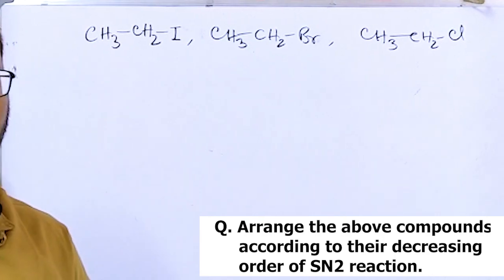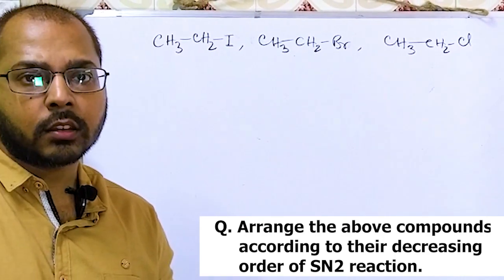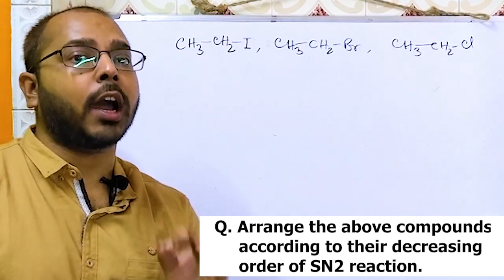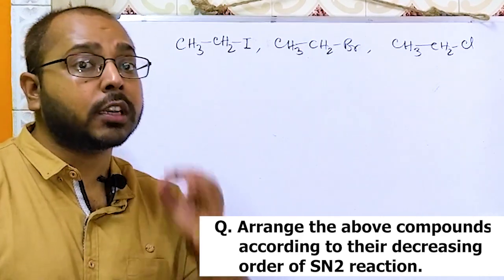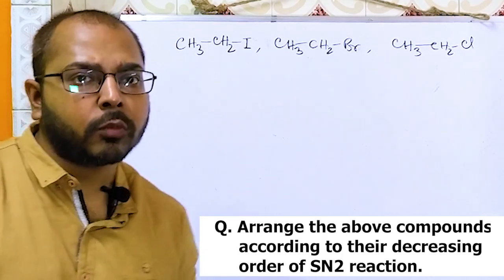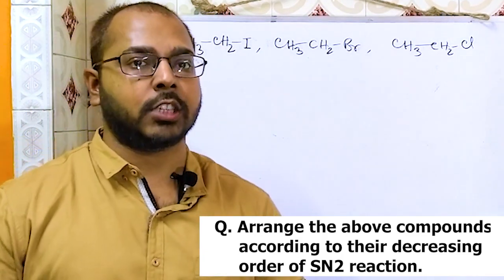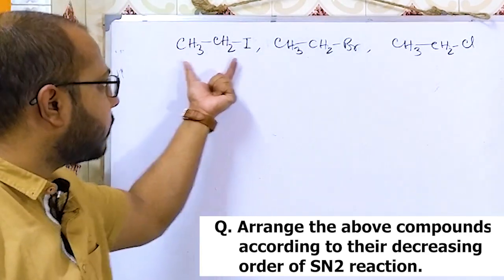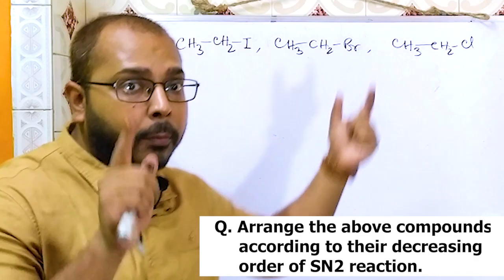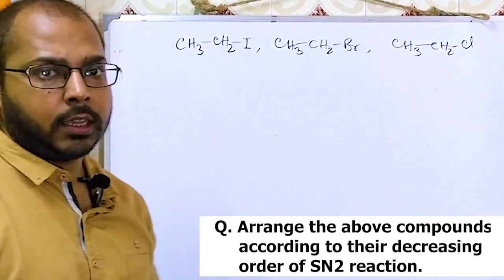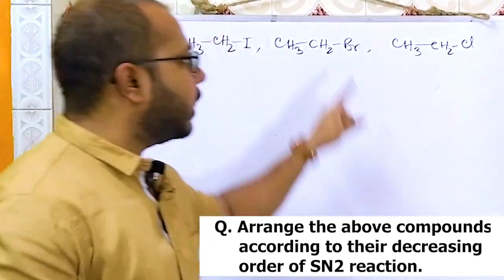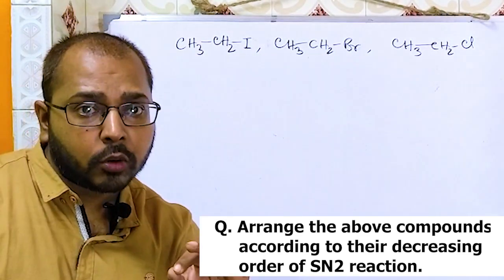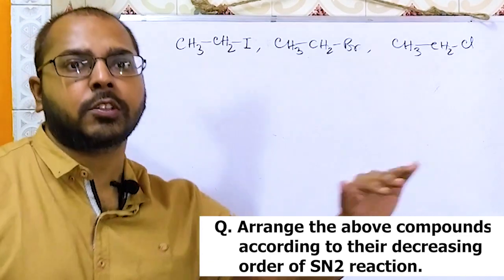In SN2, there is no carbocation formation because the nucleophile is strong and attacks the substrate before carbocation can form. The substrate portion is common in all three, but the leaving group is different — chlorine, bromine, and iodine respectively. A better leaving group means faster substitution.